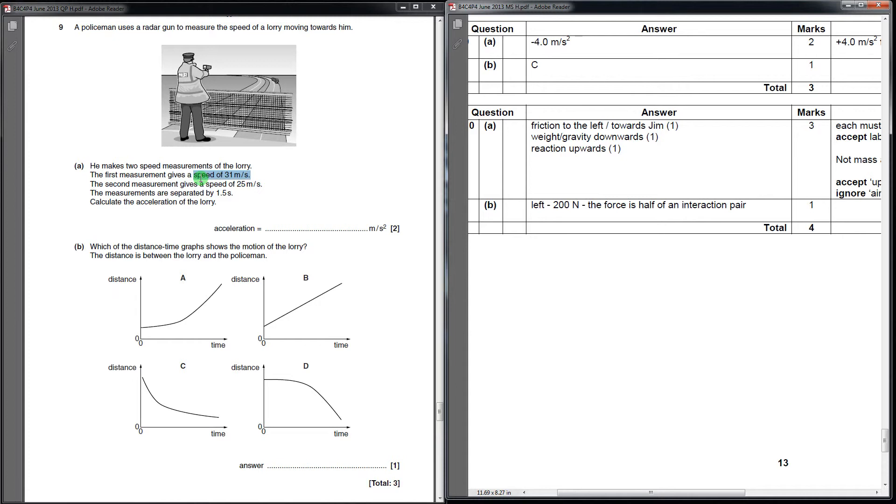We know that to start with, the lorry was going at a higher speed than later on. So the graph we've got to select has to be one where the lorry is going faster at the start than at the end. It says the distance is between the lorry and the policeman.